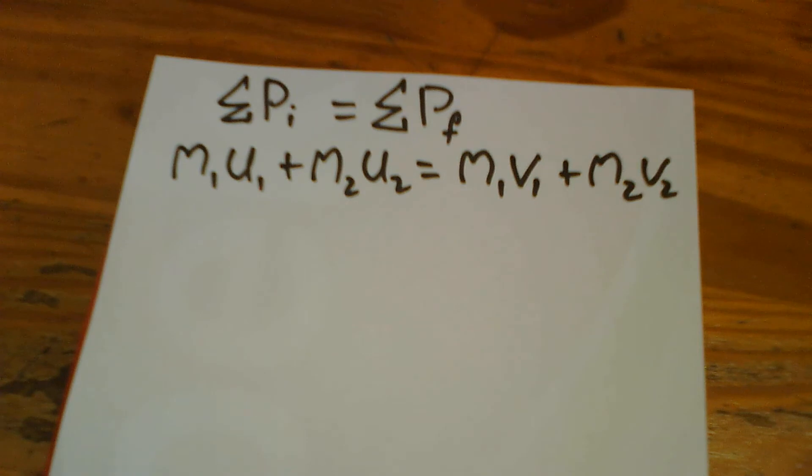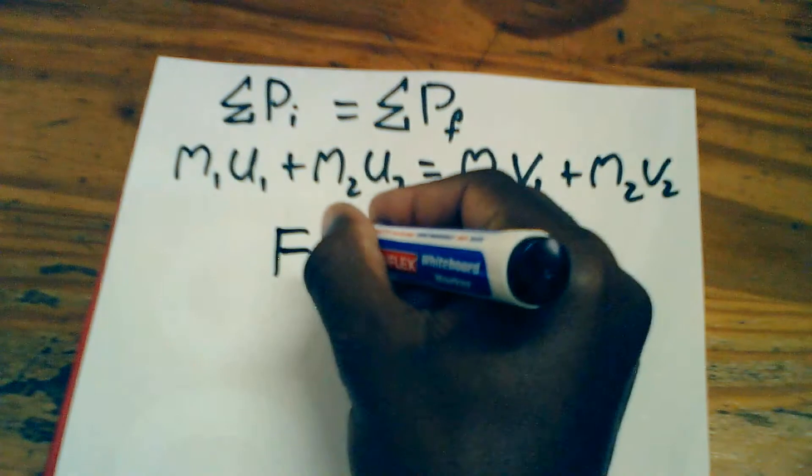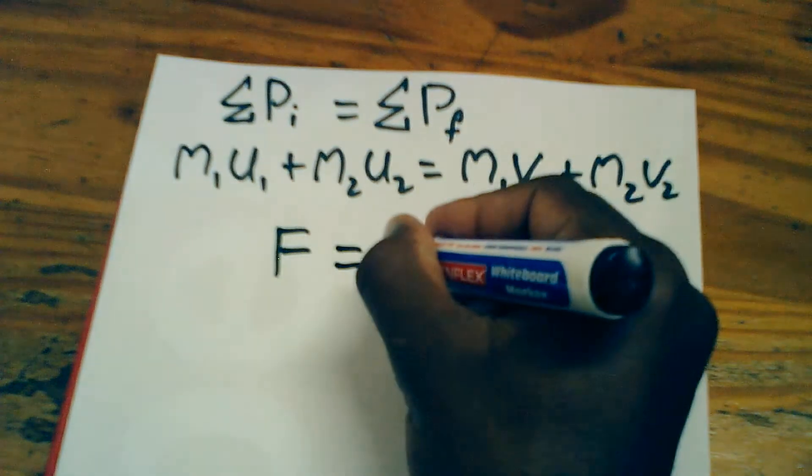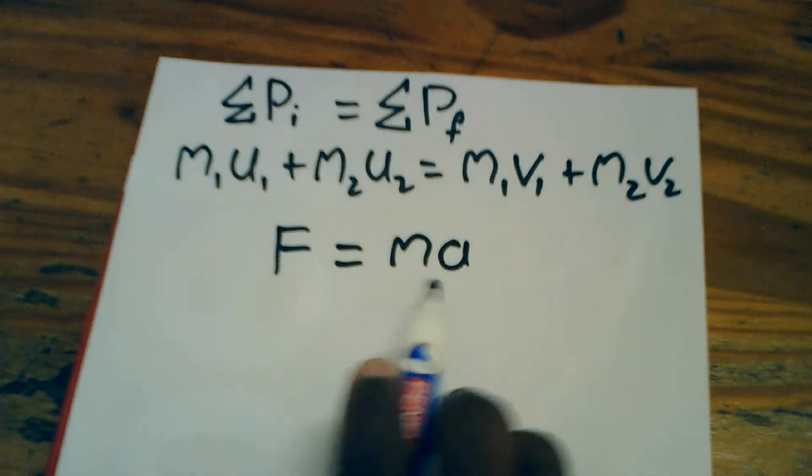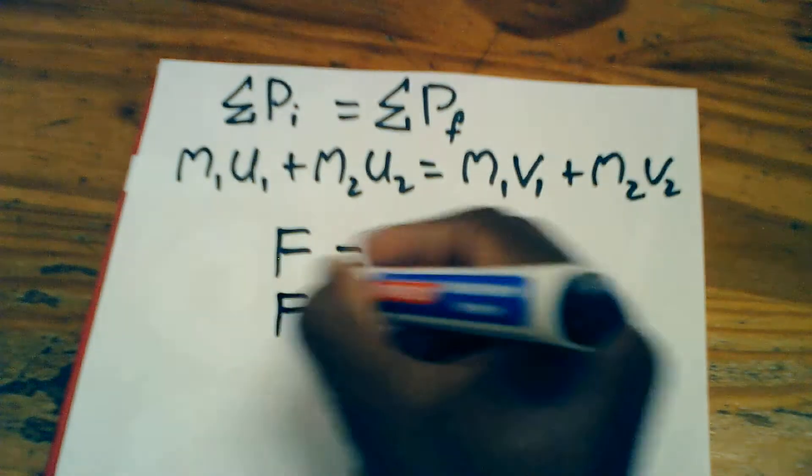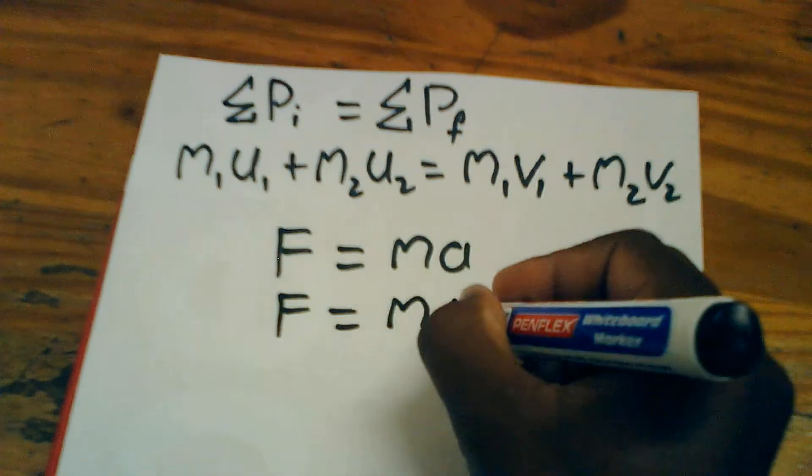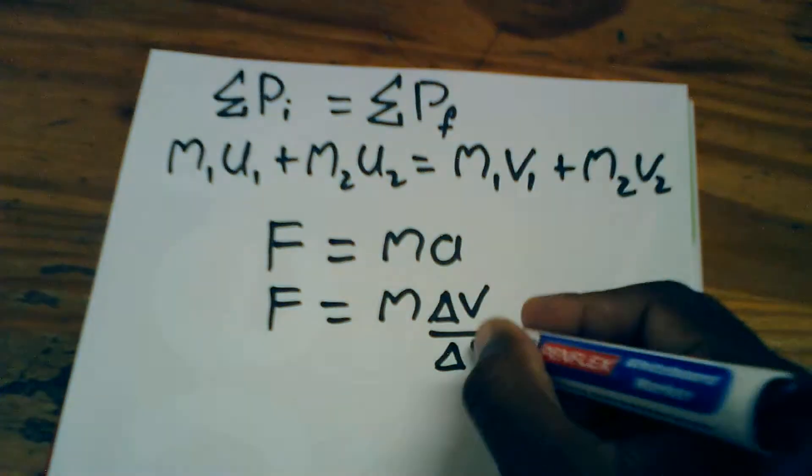So let's start by defining Newton's second law. Newton's second law says that the force, the sum of the forces equals to MA. And we know that the acceleration is the rate of change of velocity. This means that F equals to M delta V all over delta T.